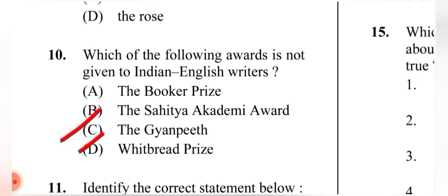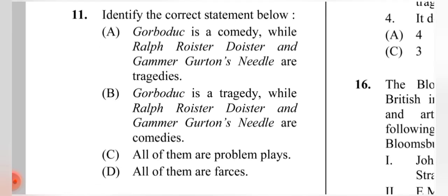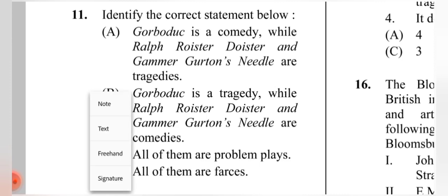Note: The Gyanpith Award is India's own literary prize given to writers of Indian regional/native languages. Please verify whether it is given to Indian English writers. Question 11: Identify the correct statement — the correct answer is (B): 'Gorboduc' is a tragedy while 'Ralph Roister Doister' and 'Gammer Gurton's Needle' are comedies.